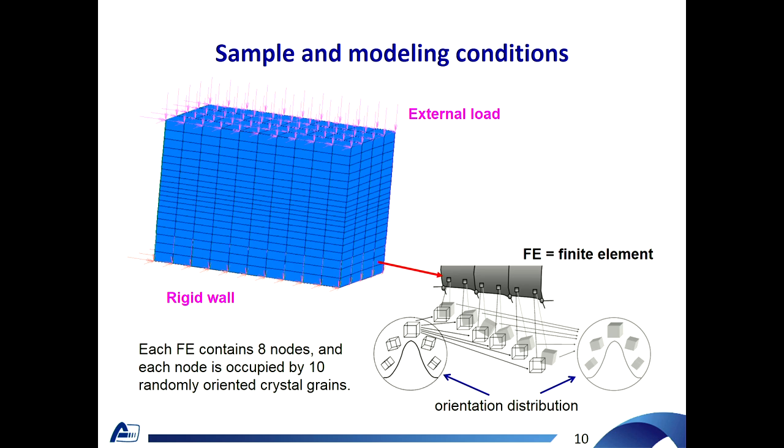Here typical simulation setup for crystal plasticity finite element method are shown. First we mesh macroscopic sample into a set of finite elements. Usually we use solid finite elements with eight computational nodes. In each node we assign 10 randomly oriented grains. For each grain we applied module described above. And then in order to obtain macroscopic deformation we average plastic response of all material grains in each computational node by simple isostrain method which assumes equal deformation of each grain.